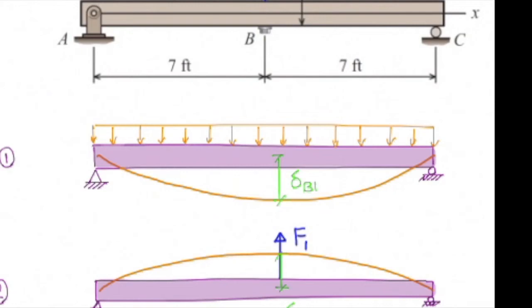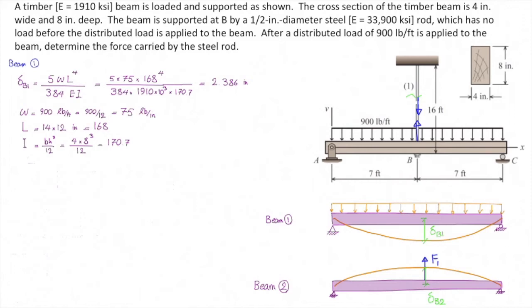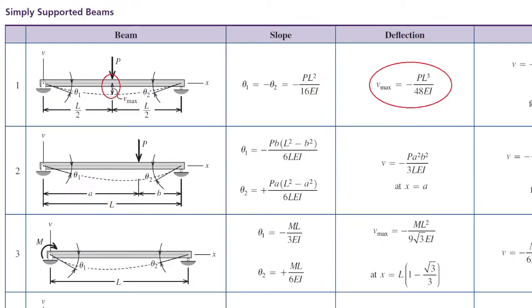That is the case where the simply supported beam is subjected to a distributed load. Now, we need to determine how much is deflection of the second beam. In the second beam, again, we get back to the table and we use this figure. And again, we need to determine how much is the deflection at the middle of that, which is maximum deflection in this case. And the equation is PL cubed over 48EI.